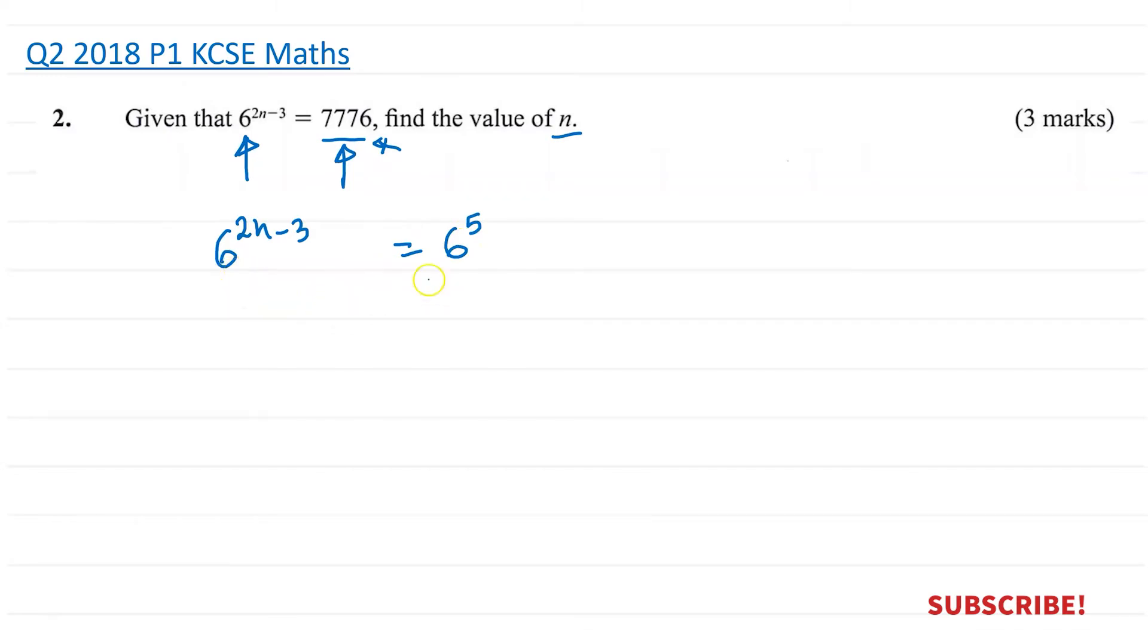Now the bases are the same, so which means the powers are the same. So we're going to equate these powers. So we can now say 2n minus 3 is equal to 5.